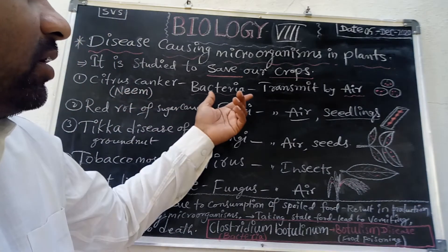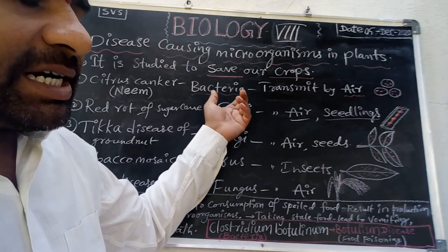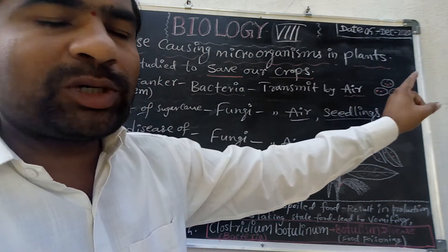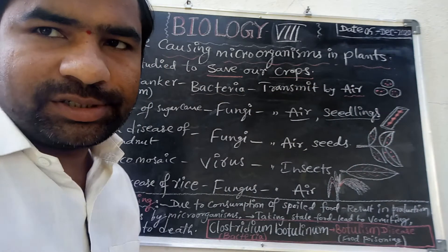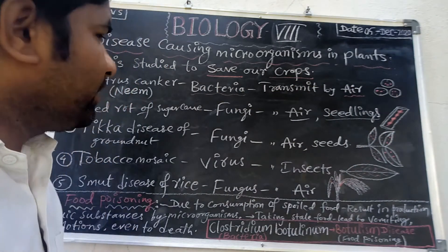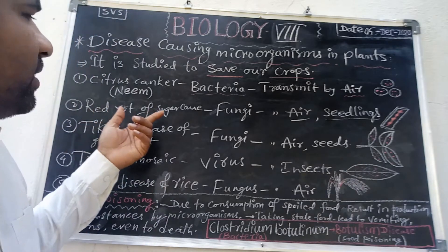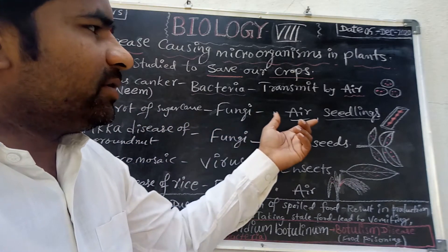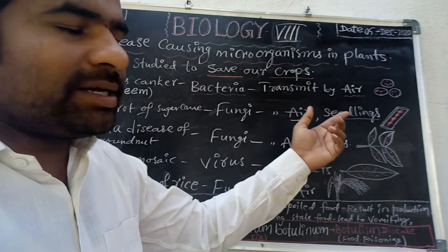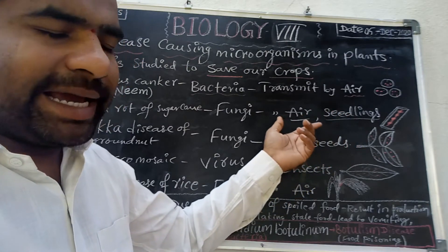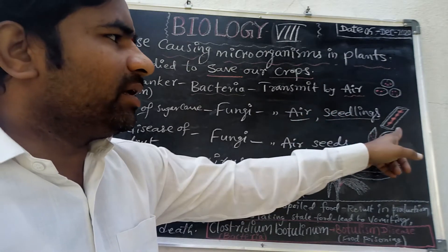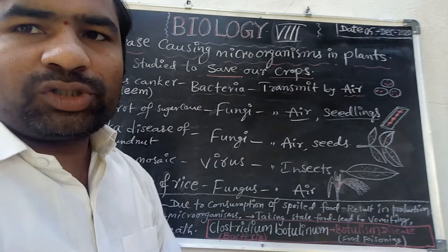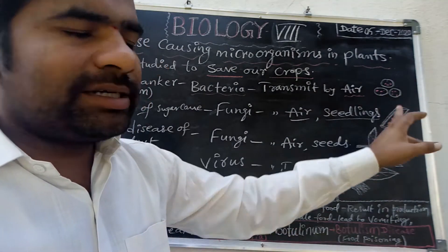Citrus canker is transmitted by bacteria, and you can see spots over the citrus fruits. The red rot of sugarcane is caused by fungi and is spread by its seedlings and air. If you cut the stem of sugarcane, you can see red scratches inside.